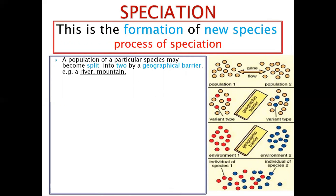For example, the population of humans in South Africa and the population of humans in America — though the distance is great, you have planes and ships which can go there. Still we can interbreed. Though we are different populations, we are still the same species while gene flow is still there.